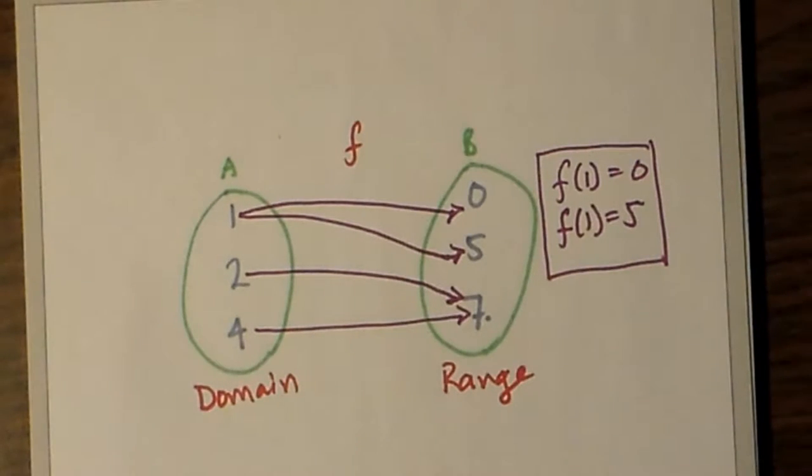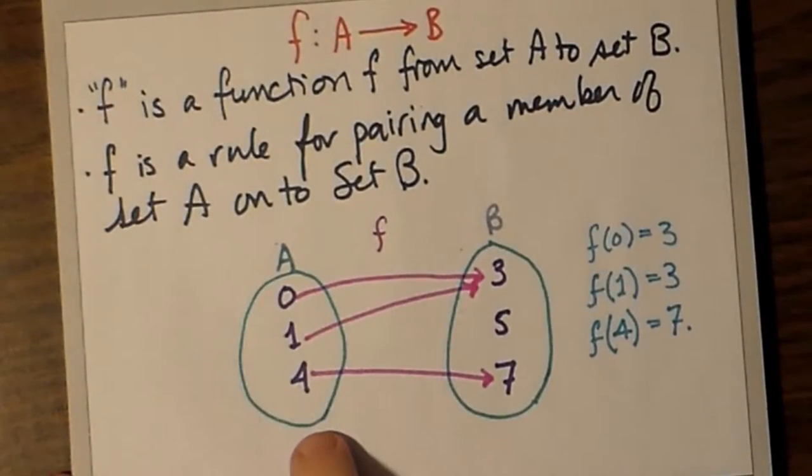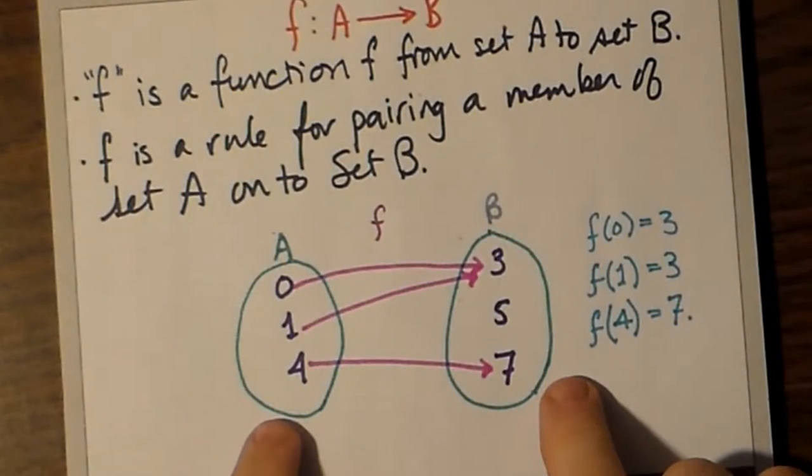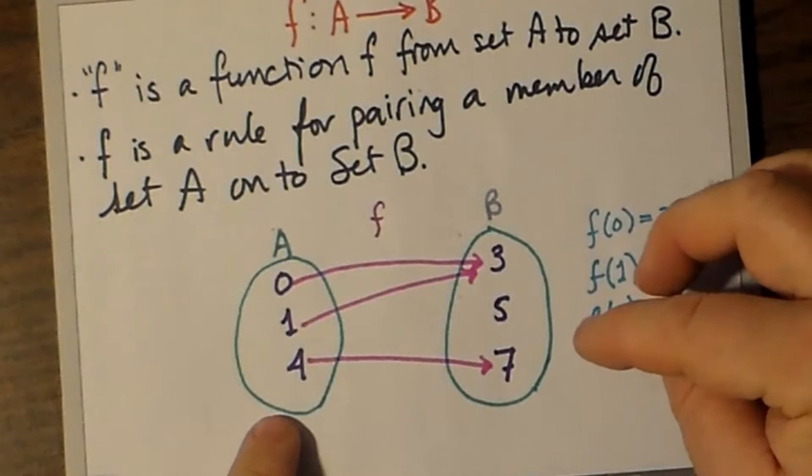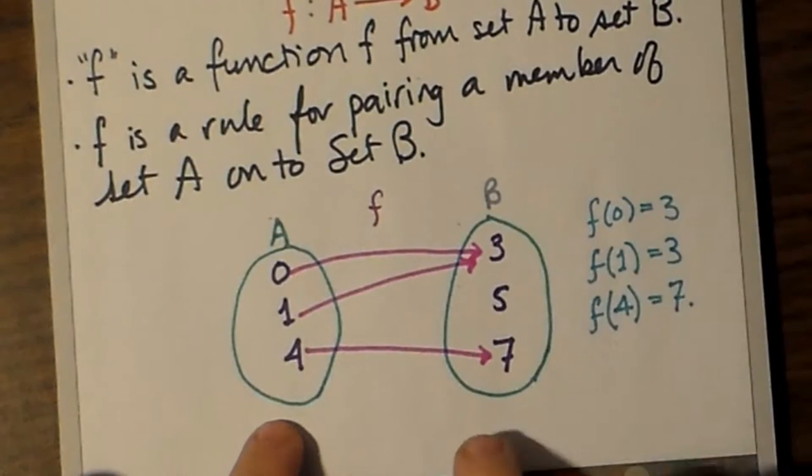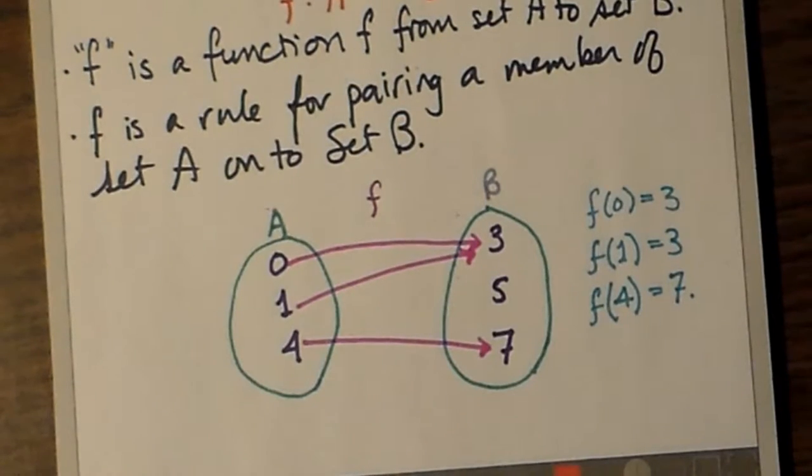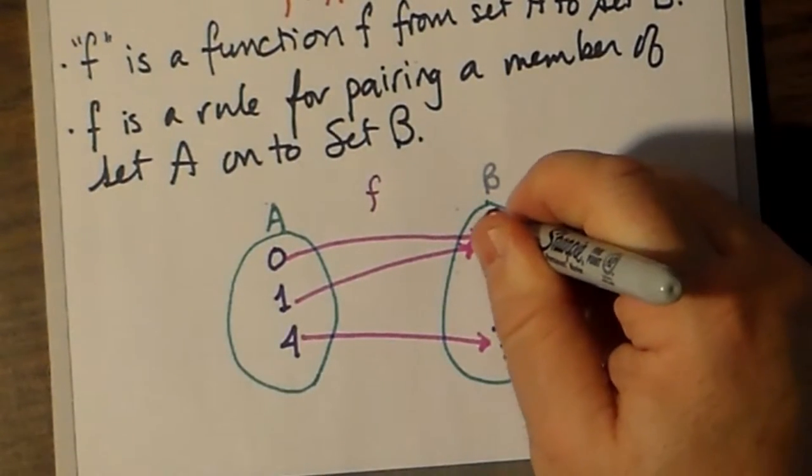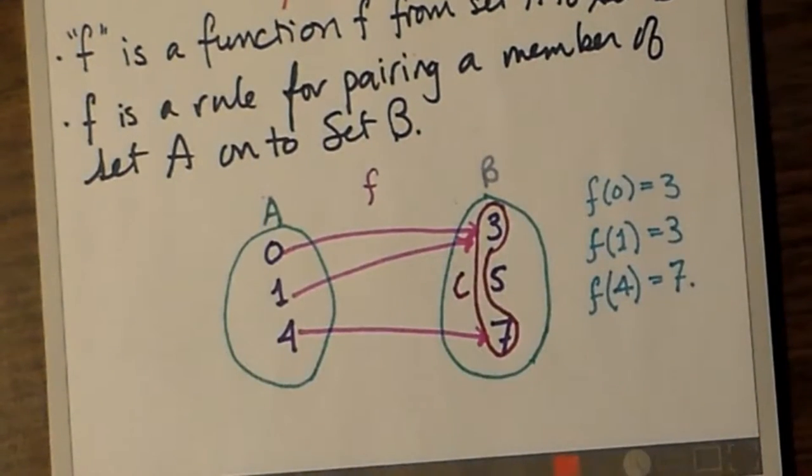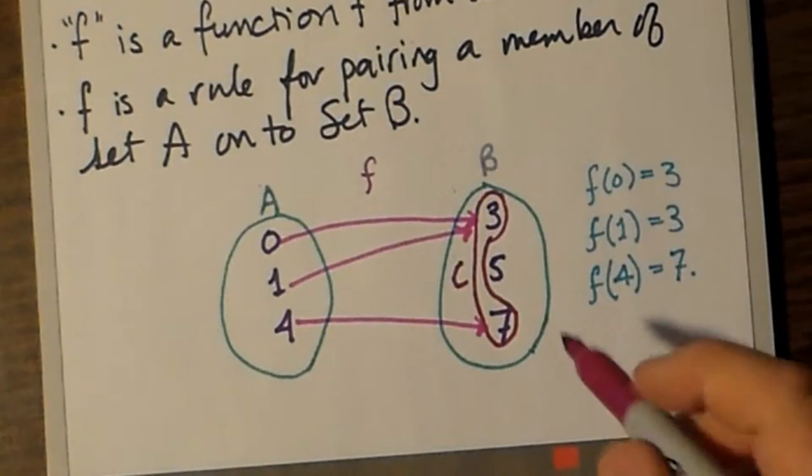Set A is called the domain of f. Set B is called the range of f. You might have noticed that not all members of B were used in the range of f. Notice, for example, 5 is not used and is not an image member of A. It looks like you could define a new set that includes only the numbers 3 and 7 as being the image values for function f.